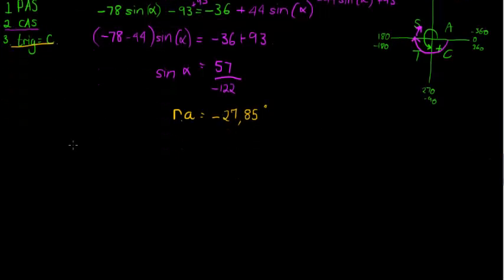I'm supposed to find the general solution for this equation, which means there's a general solution where we simply have alpha equal, and we just use alpha because there's just an alpha inside there. Alpha is equal to the reference angle, negative 27.85 plus 360 times k, that's the one.